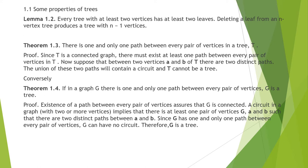Conversely, if there is a path between every pair of vertices, then G is a tree. The proof is: the existence of a path between every pair of vertices assures that G is connected. A circuit in a graph implies there is at least one pair of vertices A and B with 2 distinct paths between them. Since G has only one path between every pair of vertices, G can have no circuit. Thus G is connected and circuitless, which implies G is a tree.